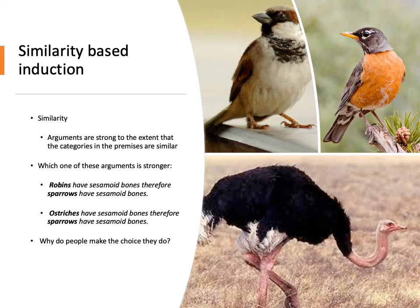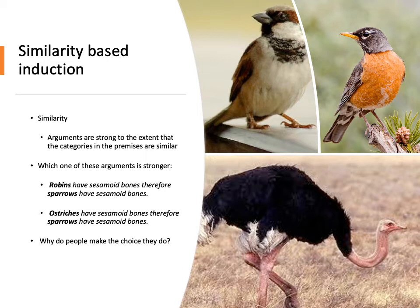This idea of categorical induction gives rise to some clear predictions. The first is similarity-based induction, which suggests that we make inductions based on the surface or deeper similarity of objects. More formally, arguments are strong to the extent that the premise categories are similar to the conclusion categories. For example, consider: robins have sesamoid bones, therefore sparrows have sesamoid bones. Most of us would agree that's a pretty good induction.